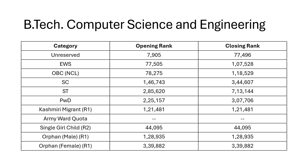For CSE, if you are a General candidate the cutoff is around 77,000. As you go to EWS, OBC, and others, you start going into the 1 lakh bracket. From SC it's around 3.5 lakh, ST is 7 lakh 13,000. PWD closed at 3 lakh. Kashmiri Migrant closed at Round 1 itself — 1 lakh 31,000, and opening and closing rank are the same, meaning only one student took admission. No Army quota admissions. Single Girl Child: 44,000. For the male/female split: Male 1.28 lakh, Female 3.39 lakh.